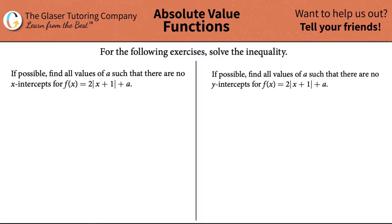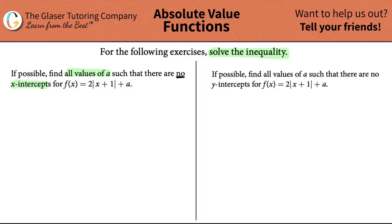For the following exercises, solve the inequality. We'll work with the first one here. If possible, find all values of a such that there are no x-intercepts for this function: f of x equals 2 times the absolute value of x plus 1, plus a.